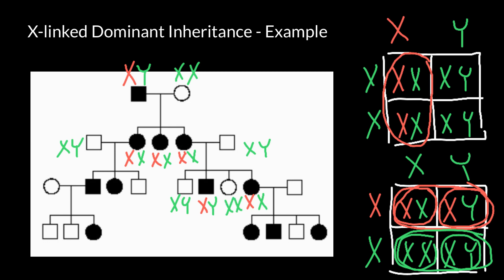This male would also have normal X and Y genotype. In the other family where the female is affected and the male is unaffected, we would also see the same pattern — the defective X chromosome would be found here and here, normal Y chromosome, normal X chromosome, and normal Y chromosome here. The female who married in, being genetically unrelated, would also have two normal X chromosomes.